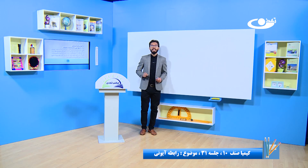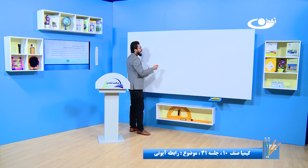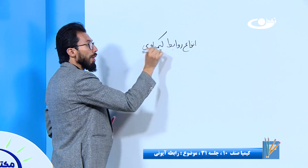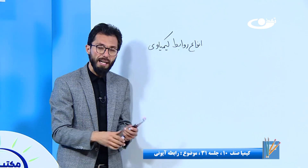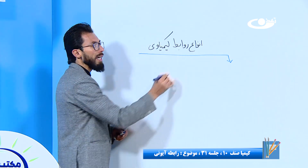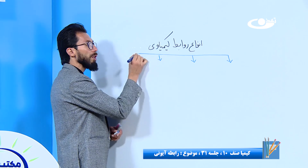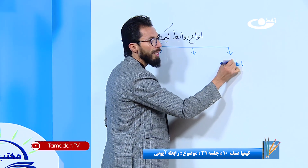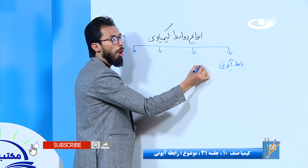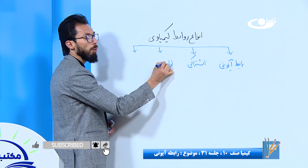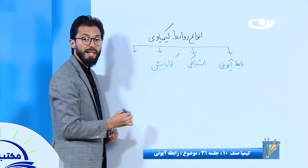در قدم اول میاییم و در مورد انواع روابط کیمیاوی با همدگه صحبت میکنیم. انواع روابط کیمیاوی را اگه نظر به کتاب کیمیای صنف ده تقسیم بندی کنیم، چهار نوع هست: رابطه آیونی، رابطه اشتراکی، رابطه کواردینیشن، و رابطه فلزی.